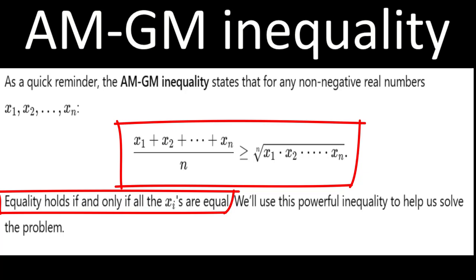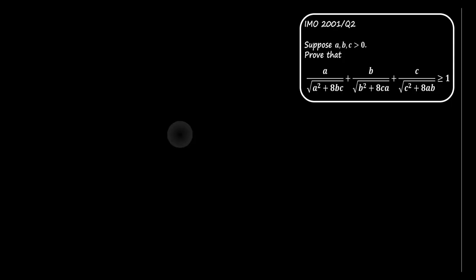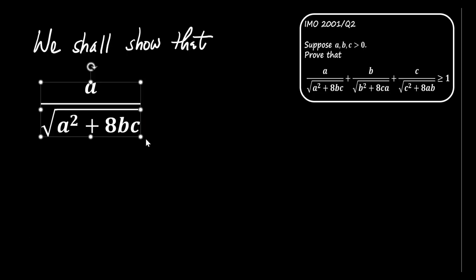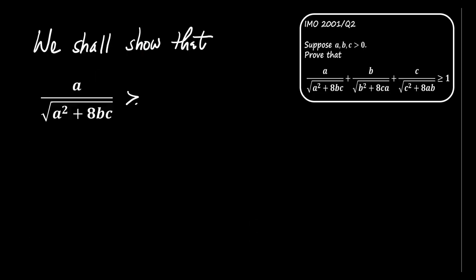Our goal is to simplify the left-hand side of the inequality by applying the AM-GM inequality. We'll first show that for each term, we can write A divided by the square root of A squared plus 8 times B times C is greater than or equal to A to the power of 4 thirds divided by the sum of A to the power of 4 thirds plus B to the power of 4 thirds plus C to the power of 4 thirds. This holds for the terms involving B and C as well. Adding up all these results will help us prove the inequality.